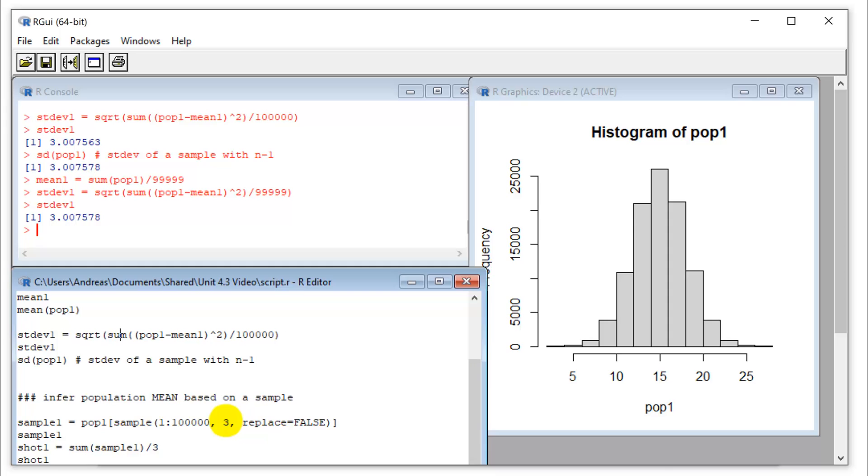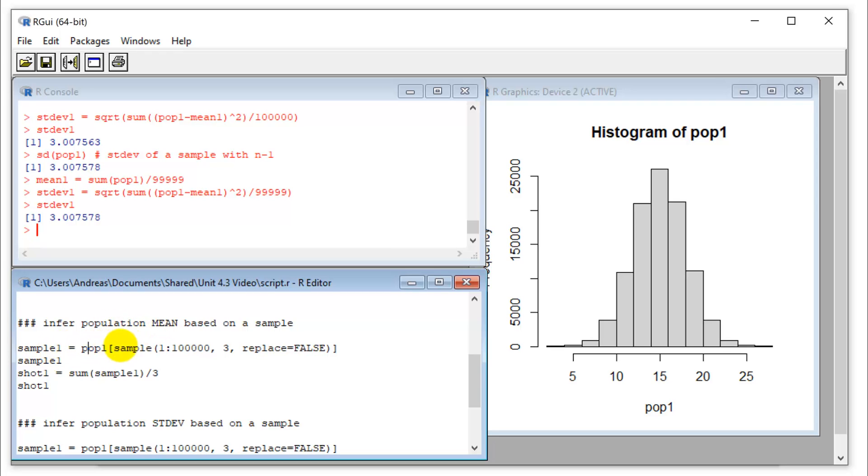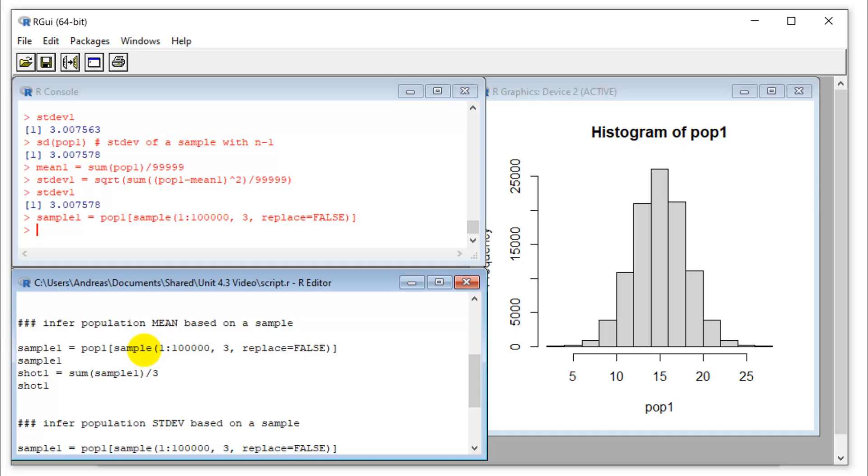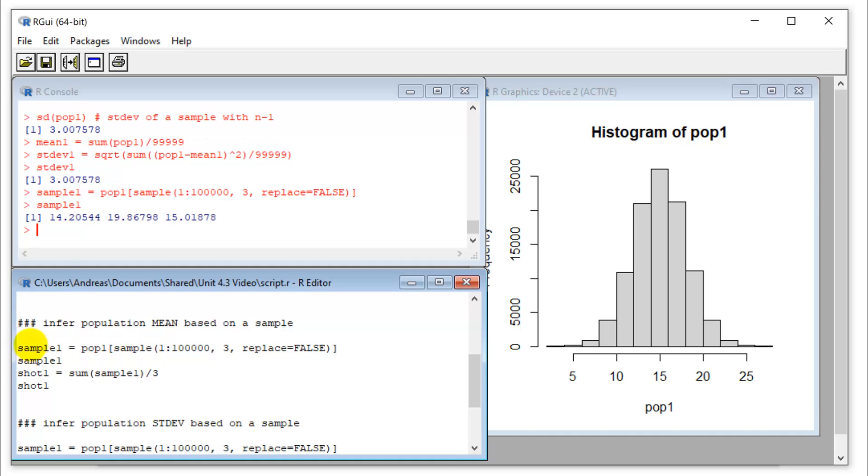And the function that R provides is sd for standard deviation. Let's try this. That's actually almost the same, but slightly different. But if I were to change this to 3, 4, 5, so n minus 1, then lo and behold, I would exactly get the same value as the standard deviation formula. Let's change this back. So we're in business. We have a population with a known mean and a known standard deviation. And now we're going to take a sample.